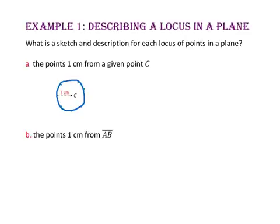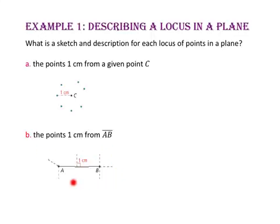For part B, we want the locus of points one centimeter from segment AB. Let's start by drawing segment AB, then draw multiple points one centimeter from the segment, including one more point one centimeter from point B. When we connect these points, our locus looks like a rounded rectangular shape — a stadium shape — surrounding the segment.